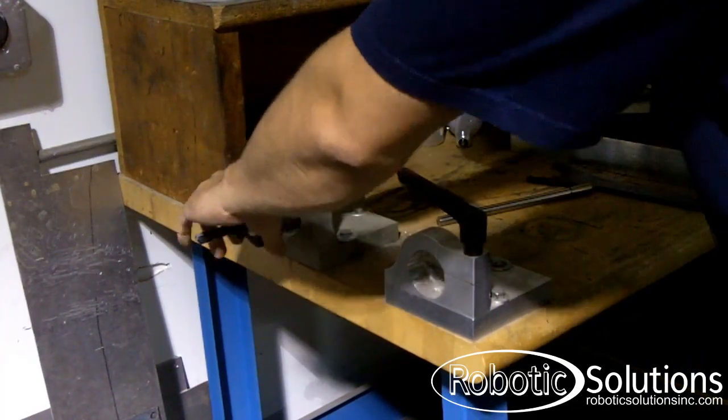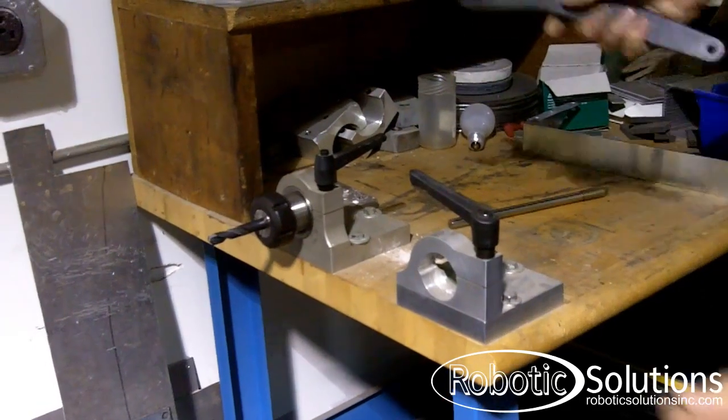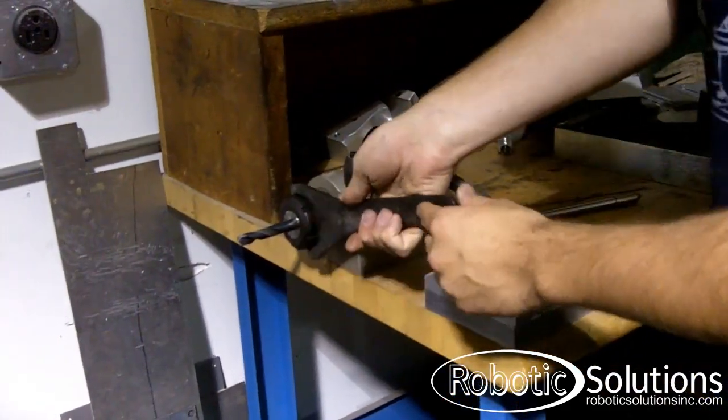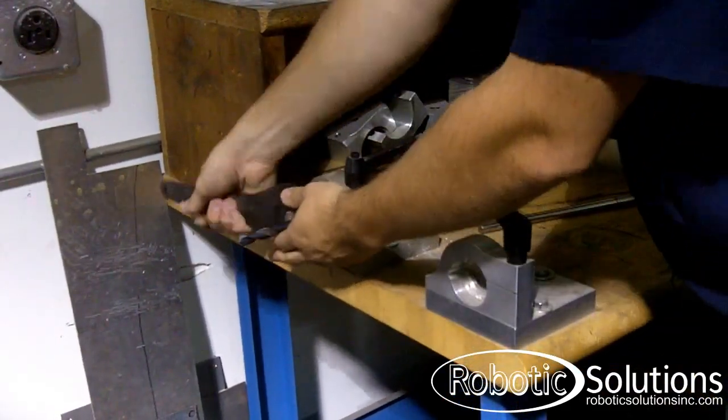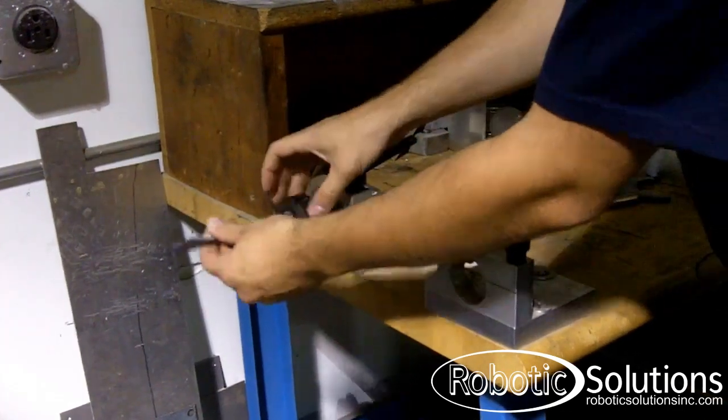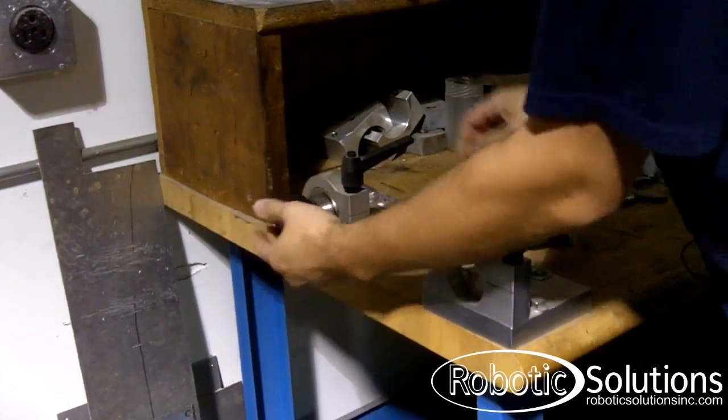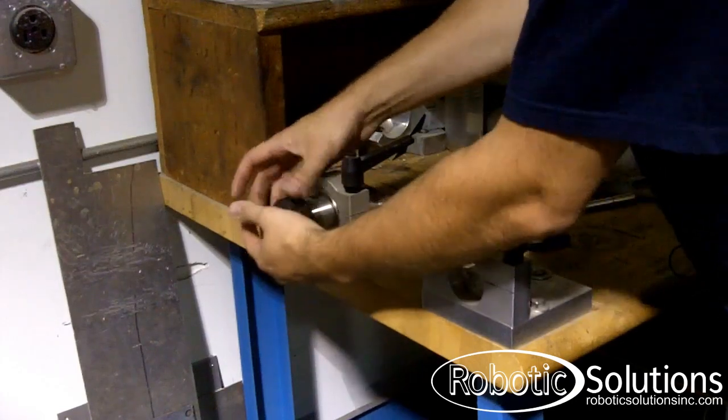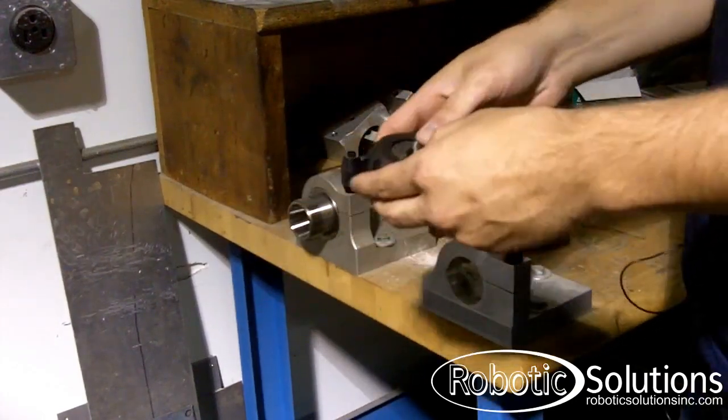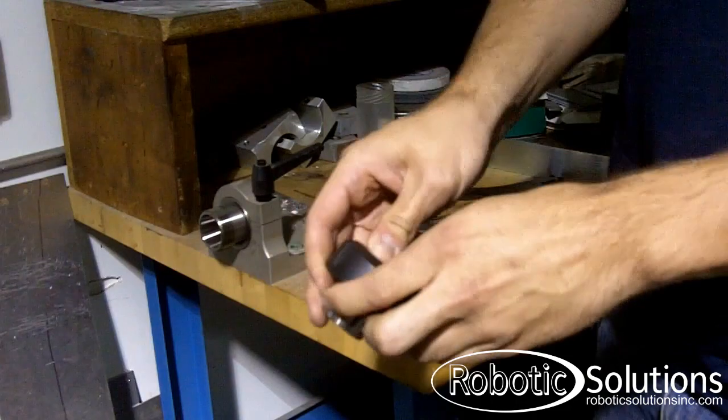Make sure it's nice and tight using the proper wrench. Loosen the collet and remove the tool. Remove the collet and collet nut and separate the two.